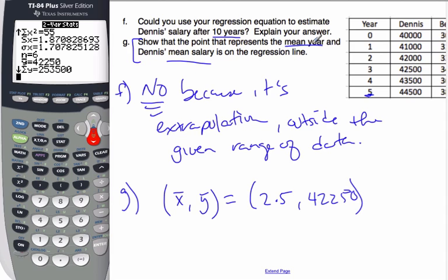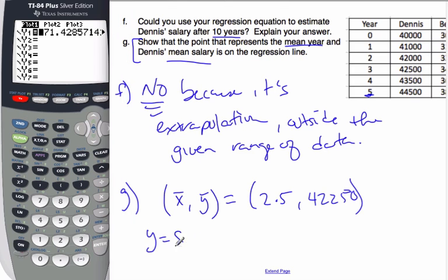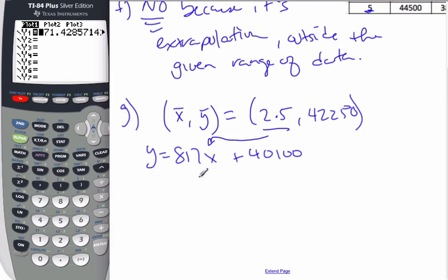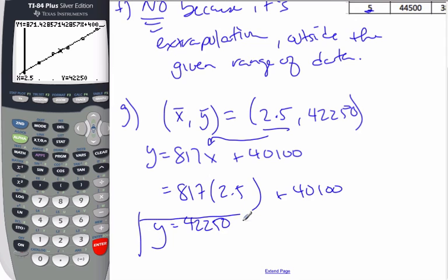So I want to show that this point is on my regression equation. If I look at my regression equation, it says Y is 871X plus 40,100. That's the regression equation. In order to do it, I'm going to plug X in. So I get 871 times 2.5 plus 40,100. And when I do that, when I do this calculation, I want to find out when X is 2.5. And indeed, I get a value of 42,250 for my Y equation. So now, therefore, X bar, Y bar is on the regression line.